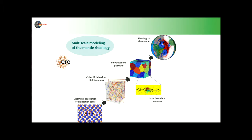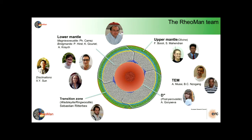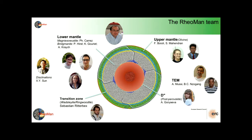There is also a lot to be done on grain boundaries, as we heard about yesterday. This has to be brought up to the scale of polycrystal and beyond. This is the kind of thing we tried to address in the project funded by the ERC. I was not alone — there was a big team with Philippe Carrez playing a very important role in numerical modeling. Today I will speak about olivine, the work of Francesca and Srinivasan, some TEM, and bridgmanite in the lower mantle.